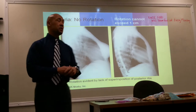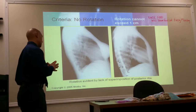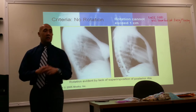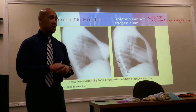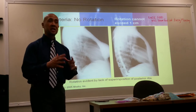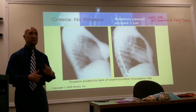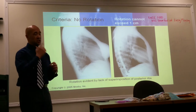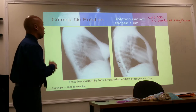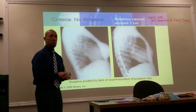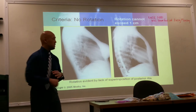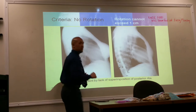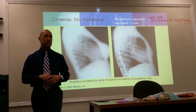There is a margin of error — you may have some rotation — but if it's grossly rotated, it has to be done again. The threshold is if there is greater than one centimeter between the two sets of ribs, you have to repeat it.